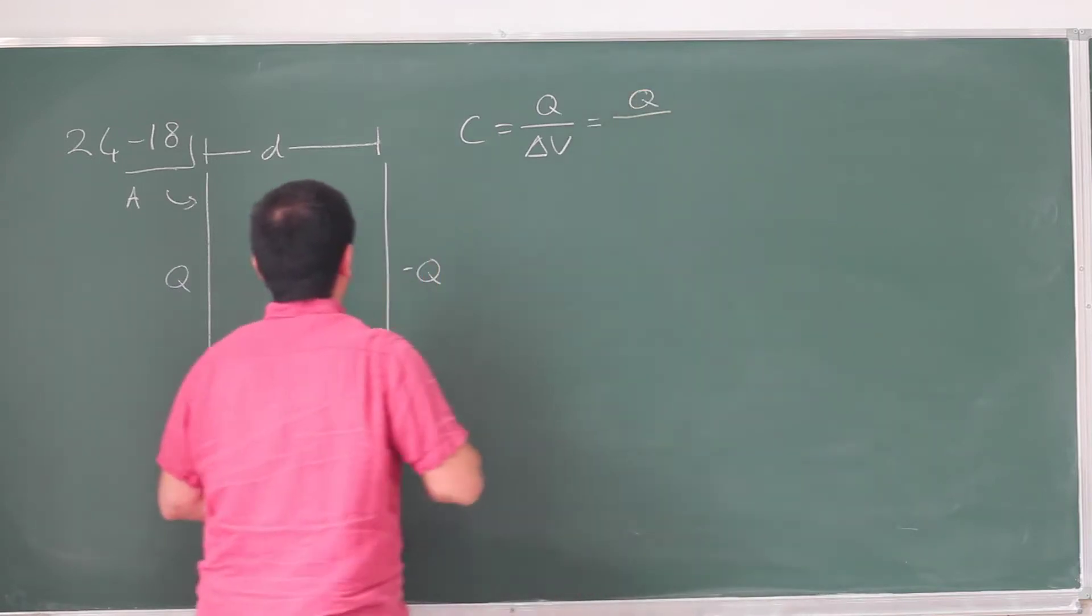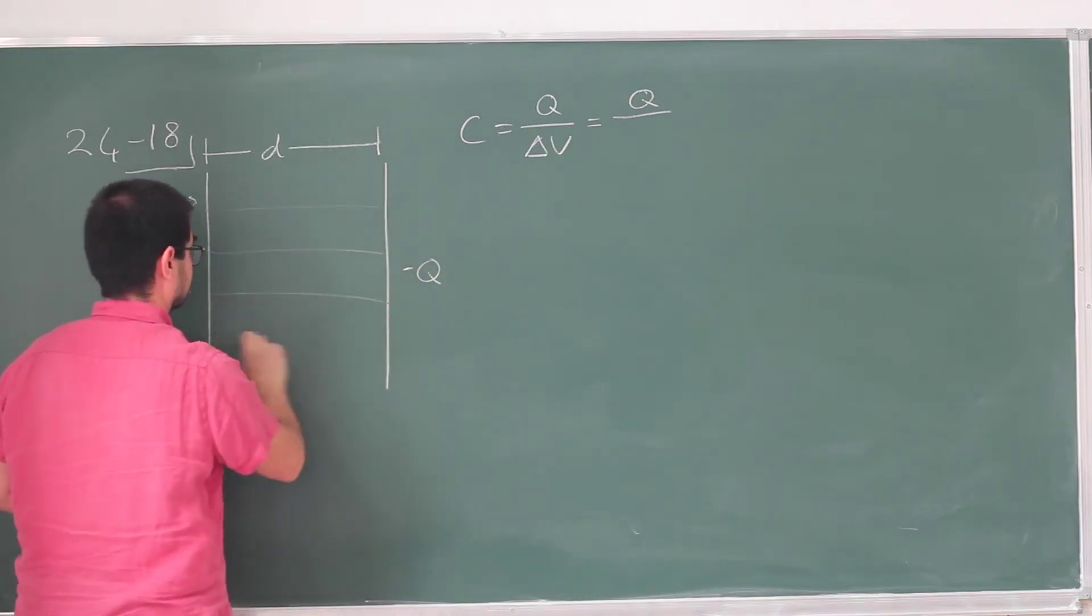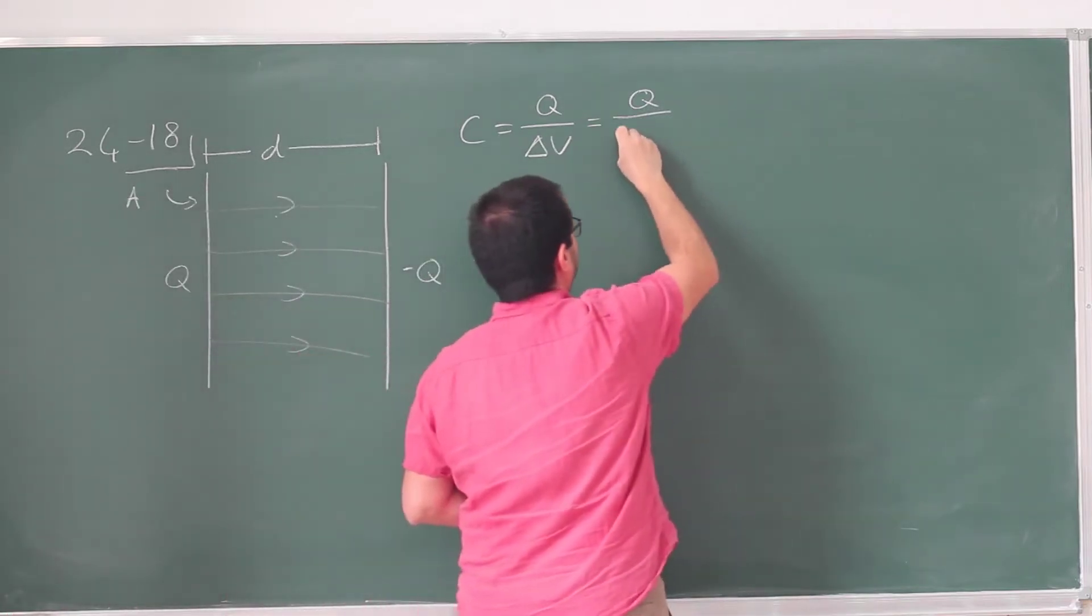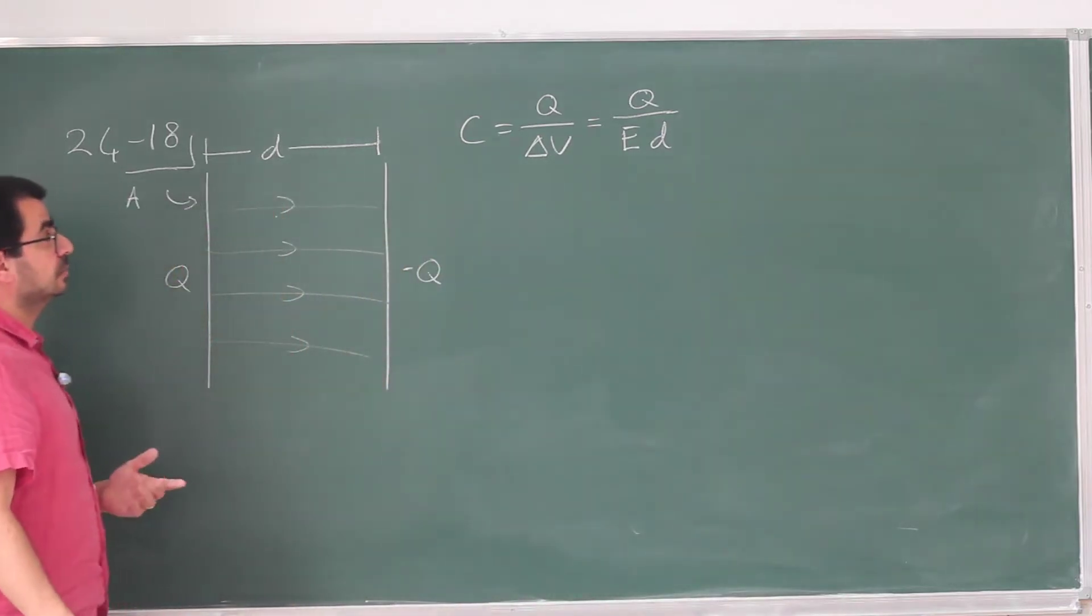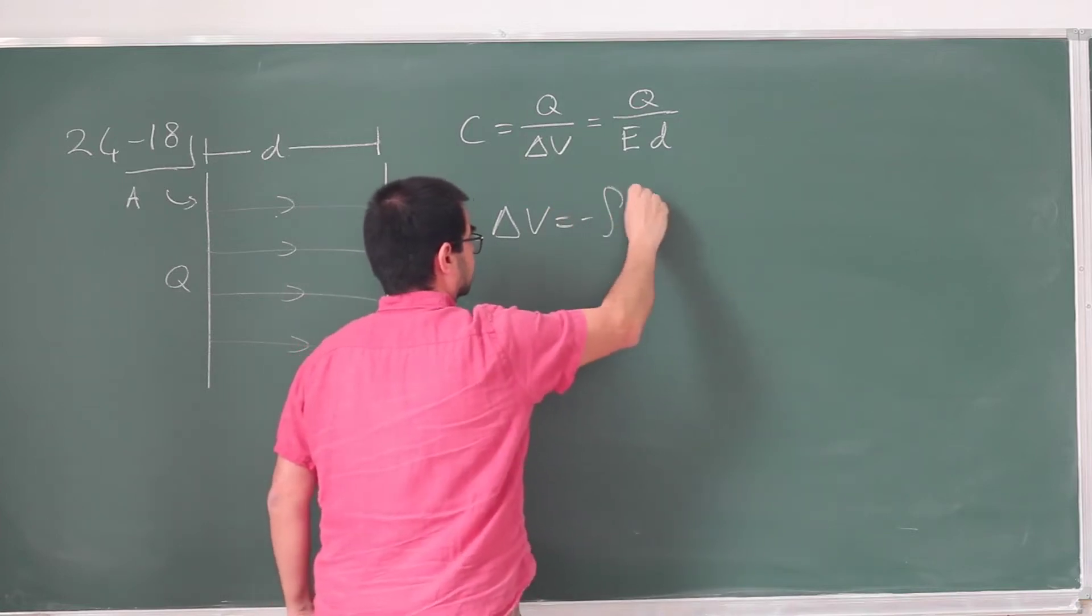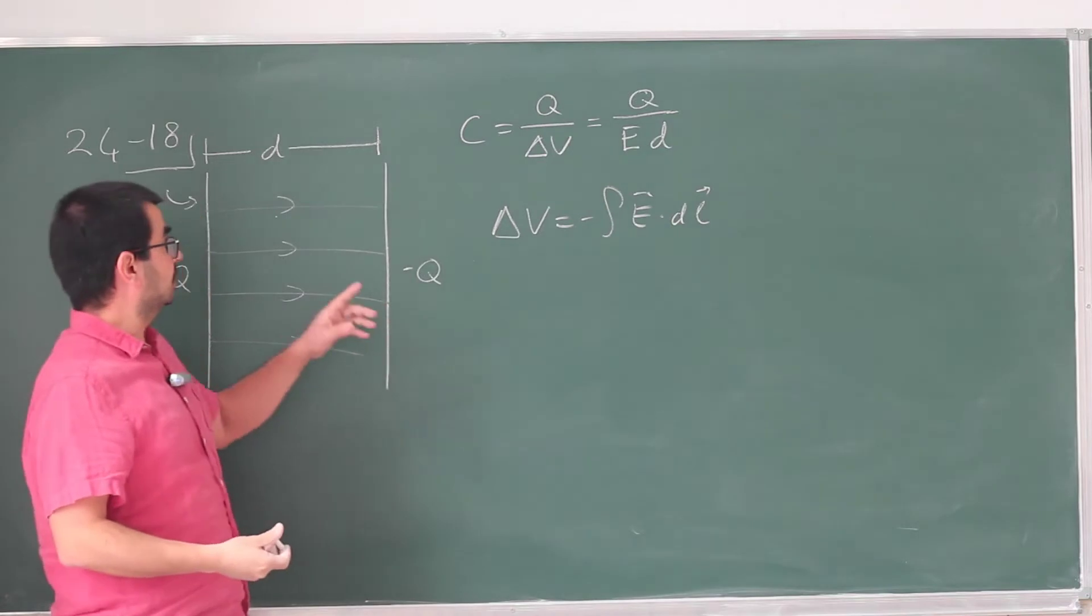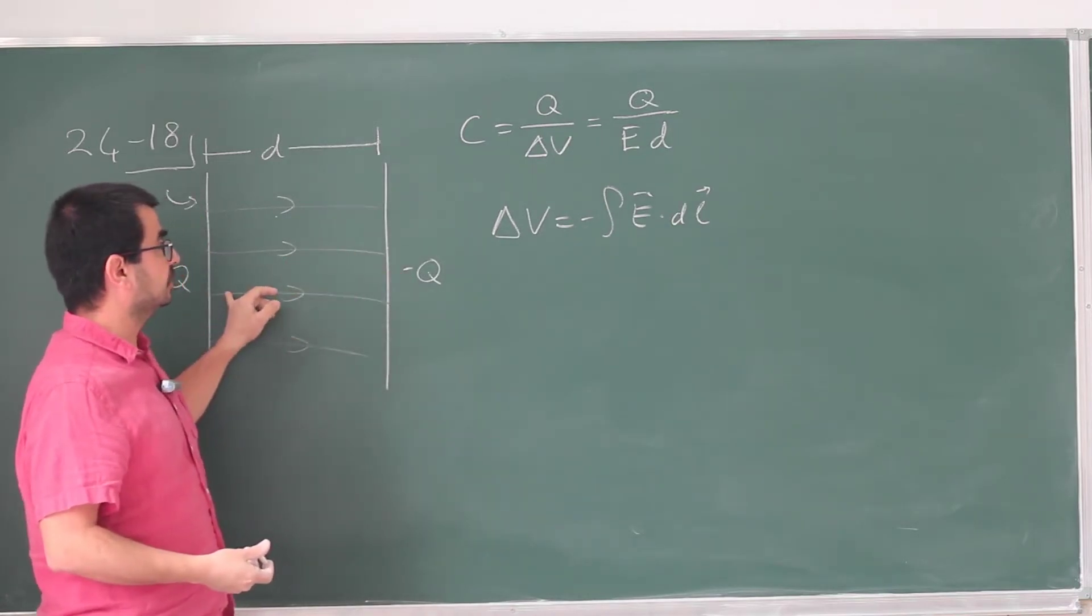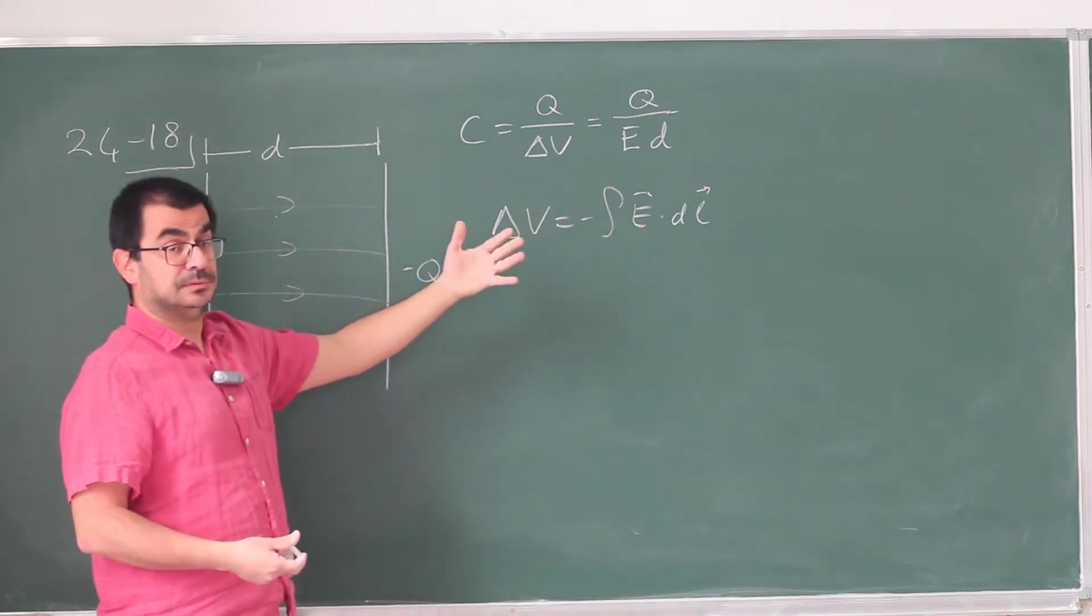This delta V is going to be, so this is going to produce some electric field. And let's just draw some electric field. It's going to be uniform. So delta V is going to be just a uniform electric field strength times the distance. Now I can do this. So delta V formally is this integral, of course. But in this case, I don't need to take the integral because the electric field, and if I choose a path that's just perpendicular to the plates, they're going to be parallel. This becomes a simple product, and the strength of the electric field is constant.